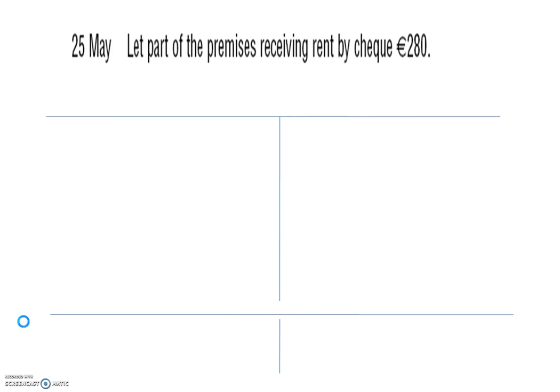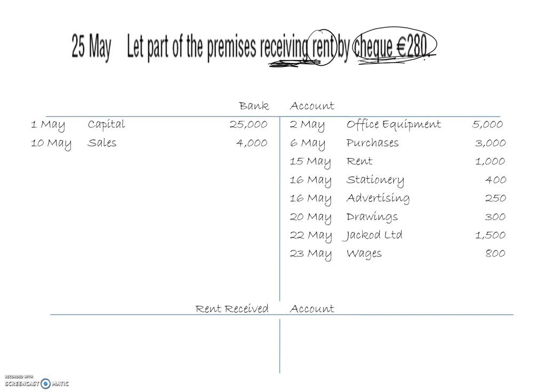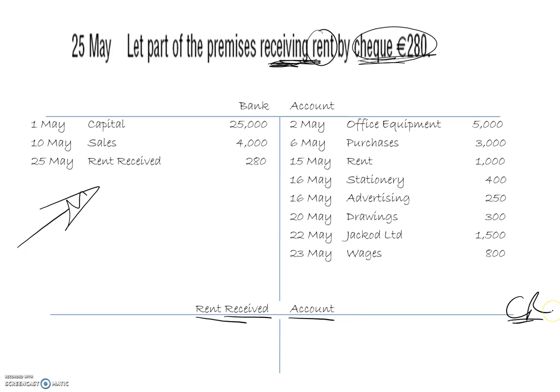25th of May: let part of the premises, receiving rent by cheque for 280. Cheque implies bank but here we're receiving money in. This is income — different from us paying rent — so we give it a new name: rent received account, to avoid confusion. Money going in is on the debit side: 25th of May, rent received, 280 in the bank. On the credit side of the rent received account: 25th of May, bank, 280.